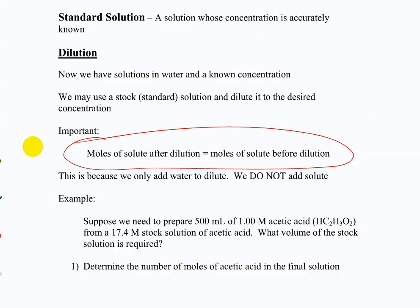If you have something of a certain concentration and you add more water to it to make it more dilute, you haven't changed the number of moles — you've changed the concentration but not the moles. That's the whole key: you can always calculate the new concentration or new volumes just by knowing how many moles you started with.